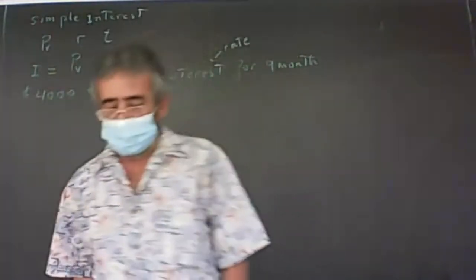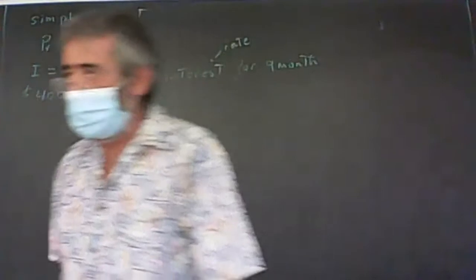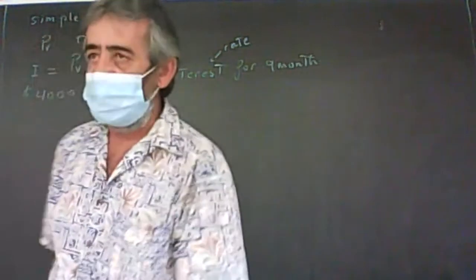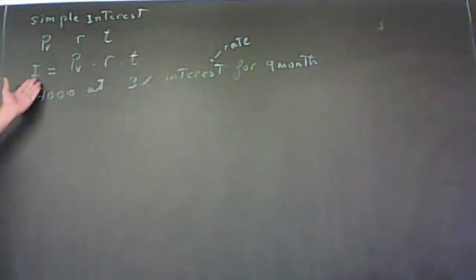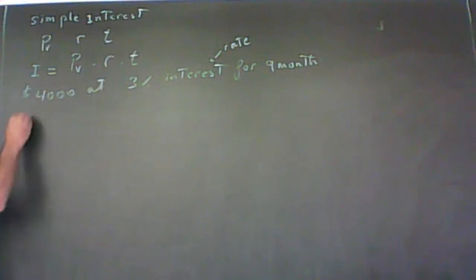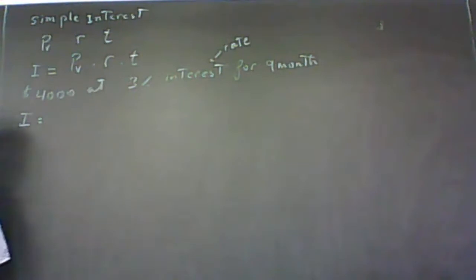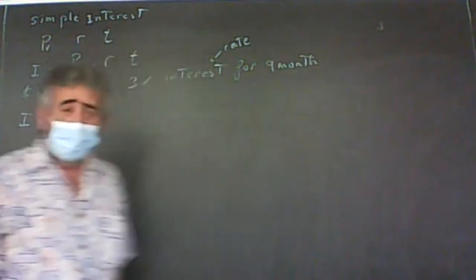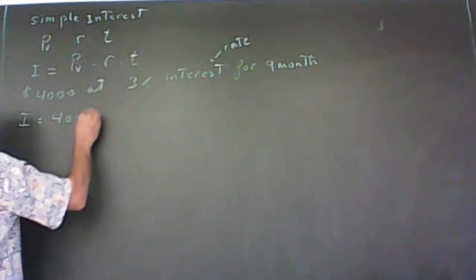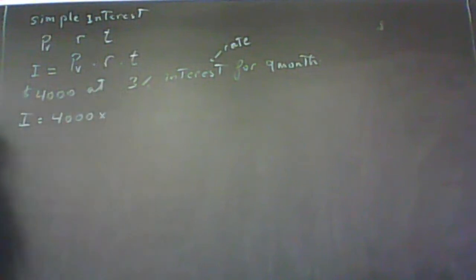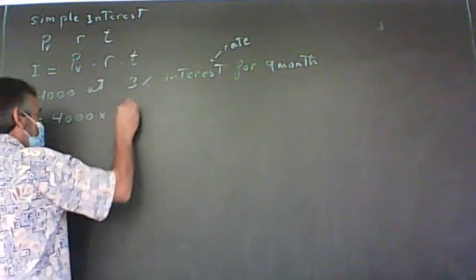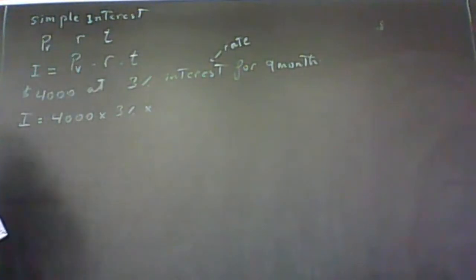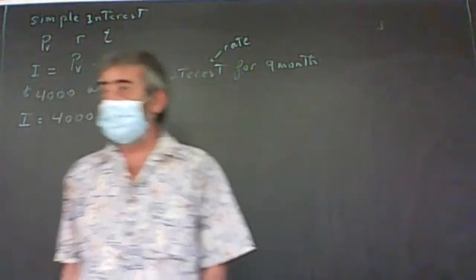We're looking for the interest I. So I equals the present value — the money she borrowed — which is $4,000, times the interest rate of 3%, times the time. She borrowed for nine months, but we need years. Nine months divided by 12 gives 9/12, or 0.75 years.